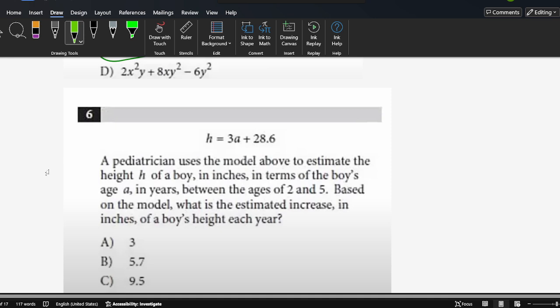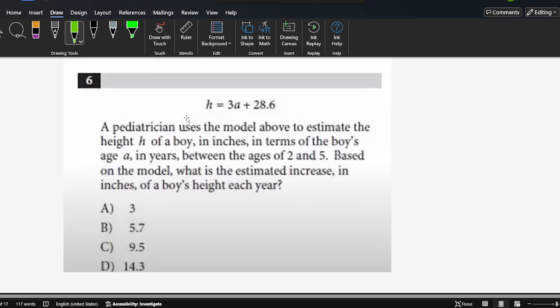Then next question here: h = 3a + 28.6. This pediatrician used the model to explain the height h of a boy in inches, in terms of the boy's age a in years. Between the ages of 2 and 5, based on the model, what's the estimated increase in the boy's height each year?